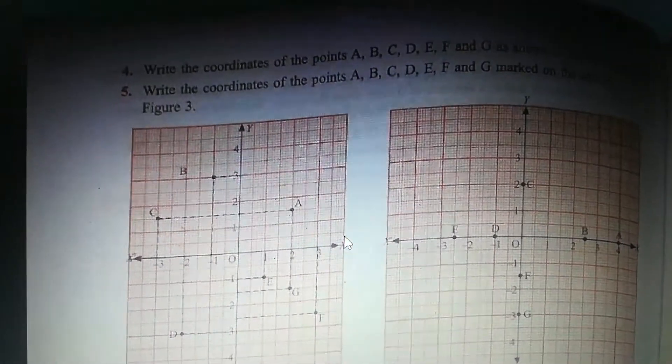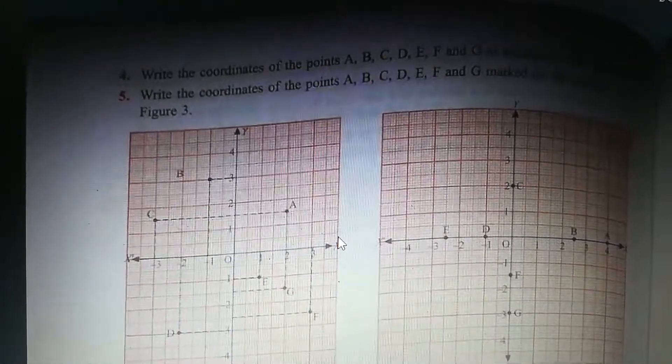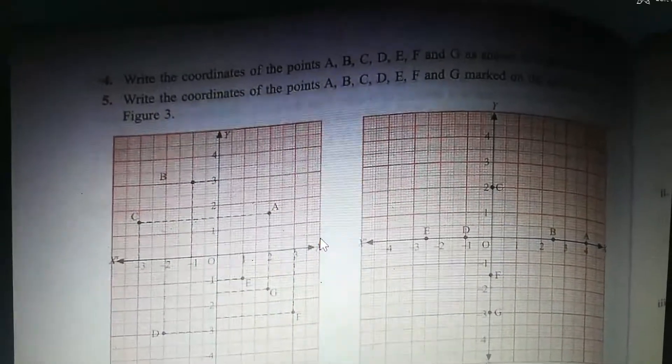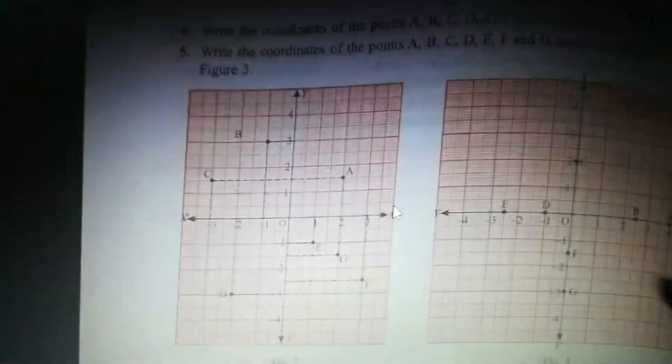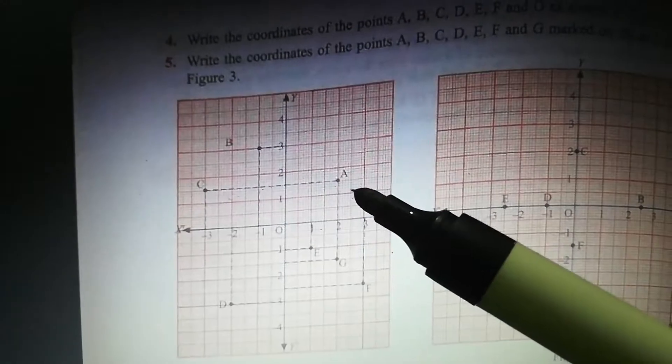So the question number for exercise 24b, and you can see the question. You're going to find, write the coordinates of the points A, B, C, D, E, F, and G.